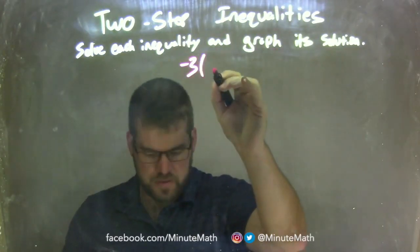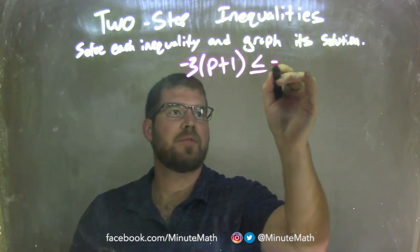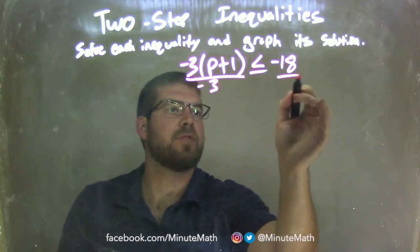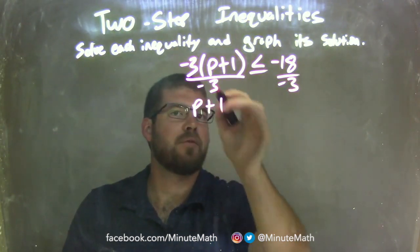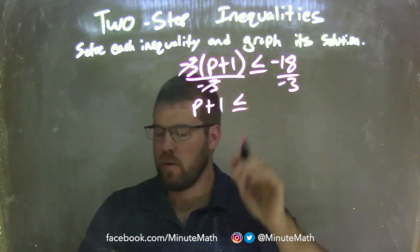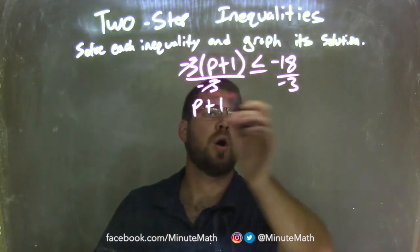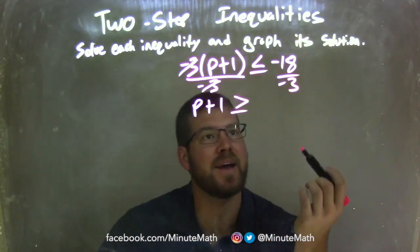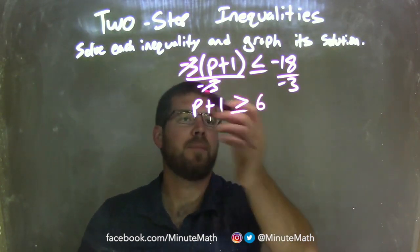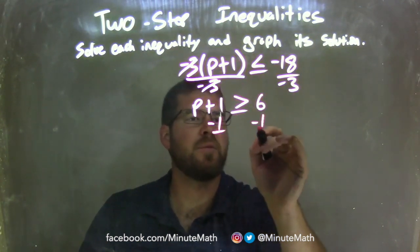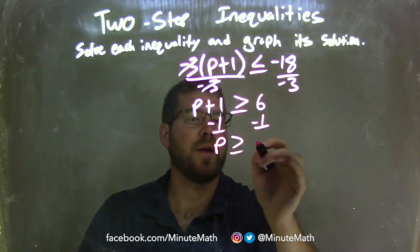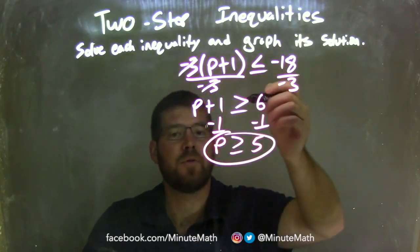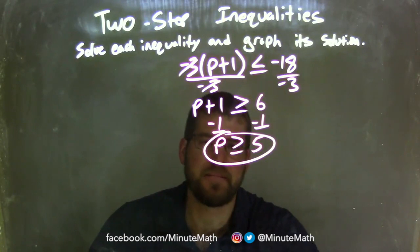Negative 3 times (p plus 1) is less than or equal to negative 18. My first step: divide both sides by negative 3. That leaves p plus 1 on the left — the negative 3s cancel. Since I'm dividing over an inequality by a negative, I need to flip the sign from less than or equal to, to greater than or equal to. Negative 18 divided by negative 3 is positive 6. Then I subtract 1 from both sides, leaving p is greater than or equal to positive 5. The most important part: we flip the inequality when dividing by negative 3.